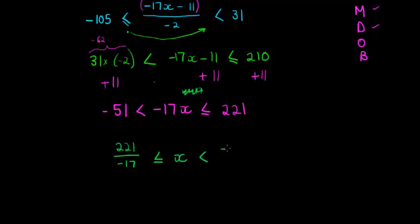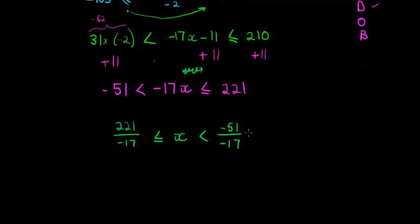Negative 17 divided by negative 17 would just be 1, so it's x is smaller than negative 51 divided by negative 17. Good. So you'll see whenever you are doing these questions, the whole time your left-hand side must be smaller or equal to your right-hand side. So this side's value must be smaller or equal to that side's value.